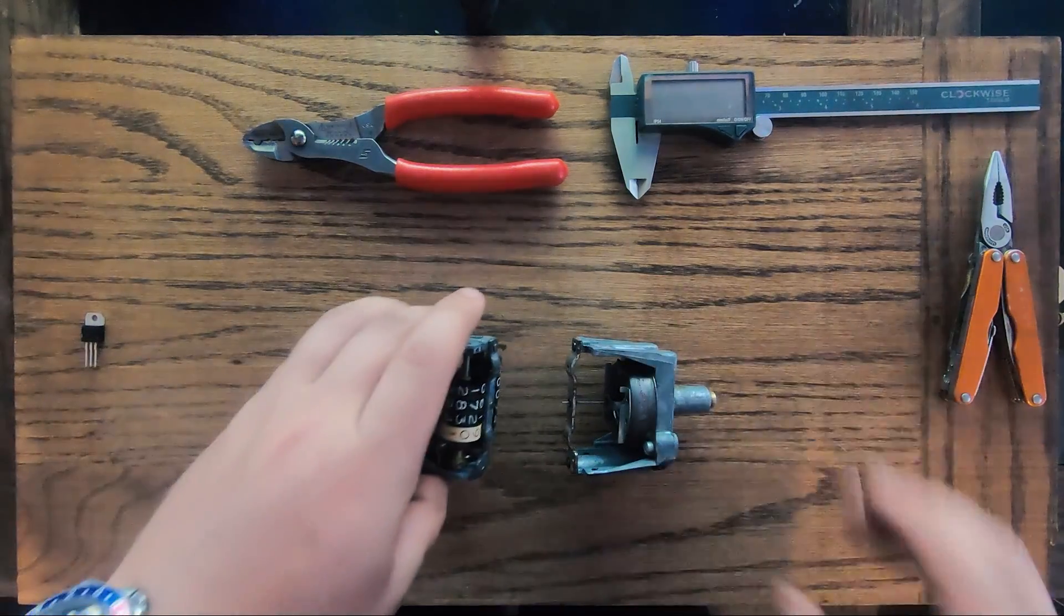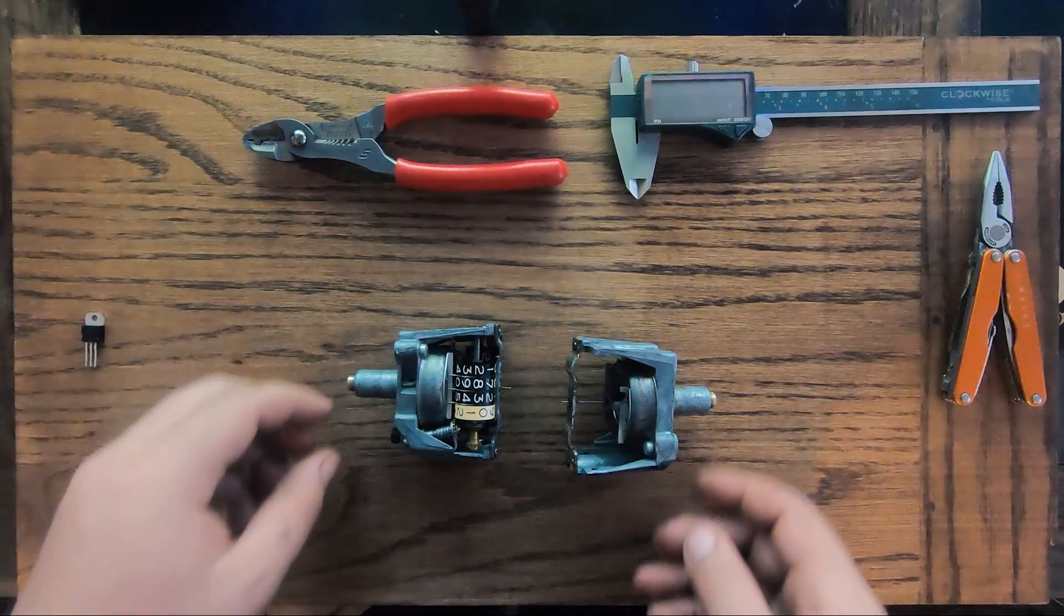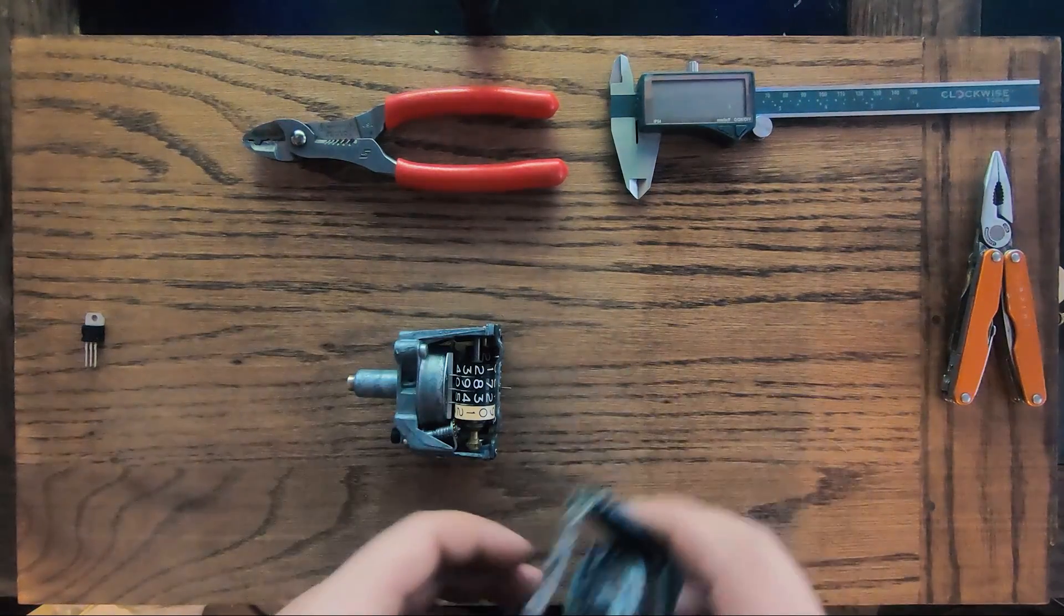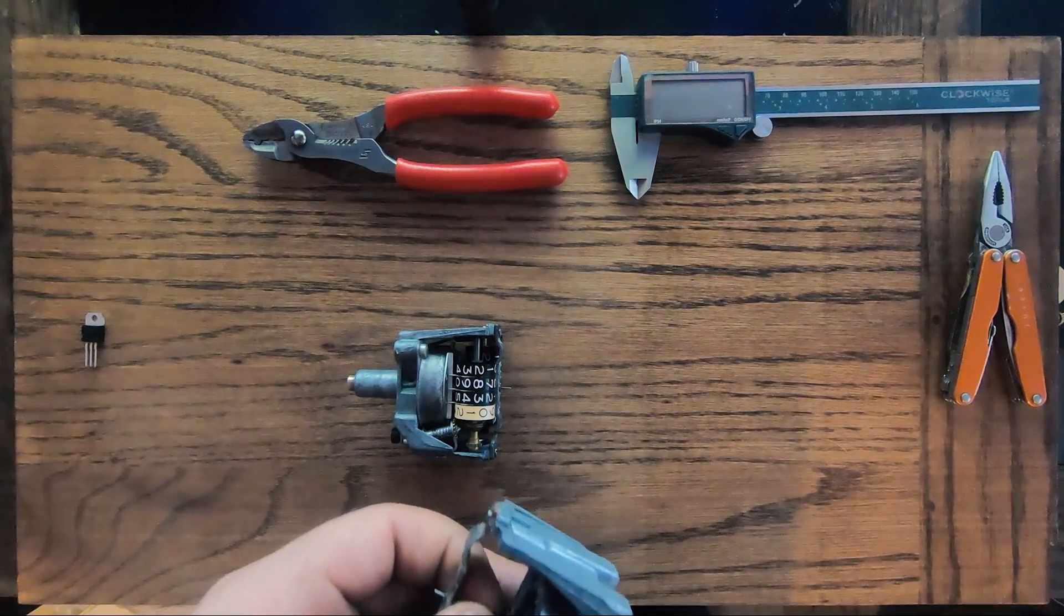So this is the factory unit, this is tachometer, this is speedometer of course. This would have come from the distributor and this would have come from the transmission. I modified these in two ways.